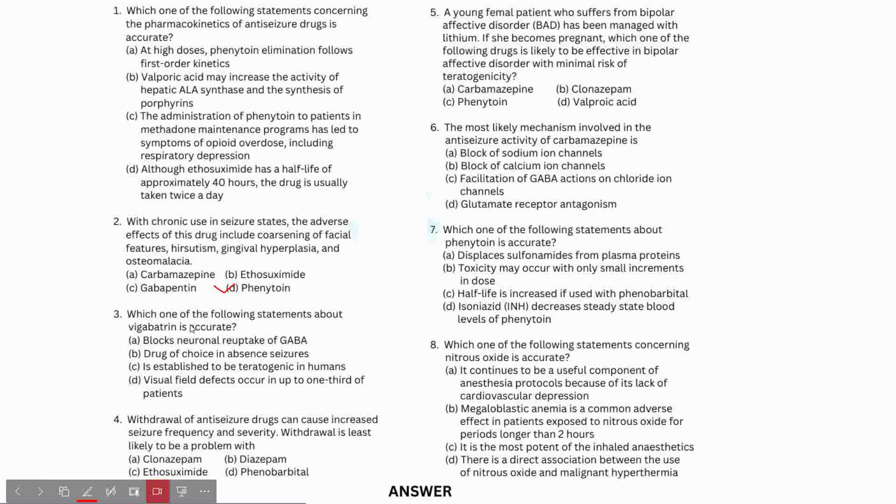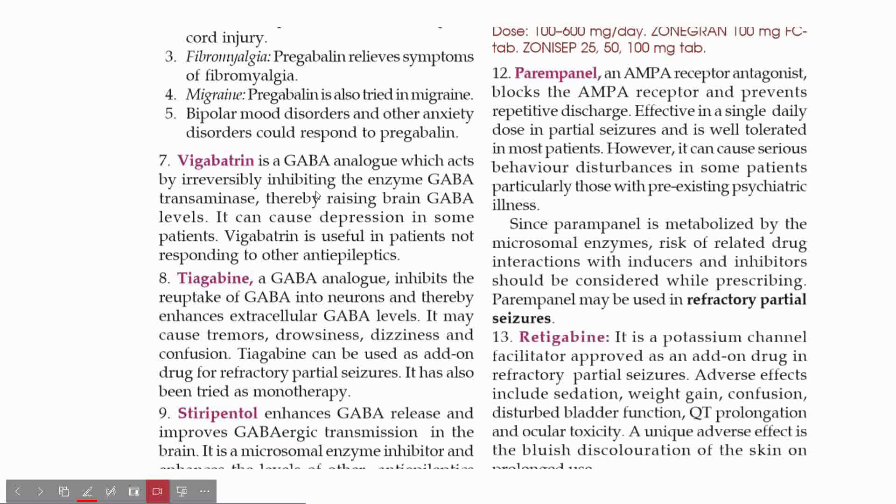Third question: Which of the following statements about Vigabatrin is correct? Does it block the neuronal re-uptake of GABA? No, Vigabatrin is classified as a GABA transaminase inhibitor. It is a drug of choice for absence seizures. All anti-epilepsy drugs are teratogenic.